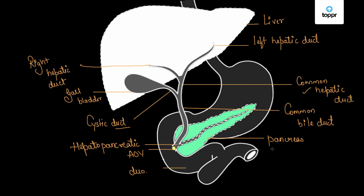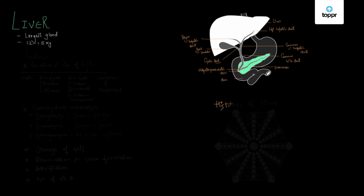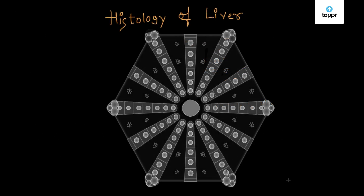Moving forward, let us observe the internal structure - the histology of the liver - to see what types of cells are present. The liver has various hepatic lobes. Each hepatic lobe contains a number of cells called hepatocytes, which are the cells of the liver.